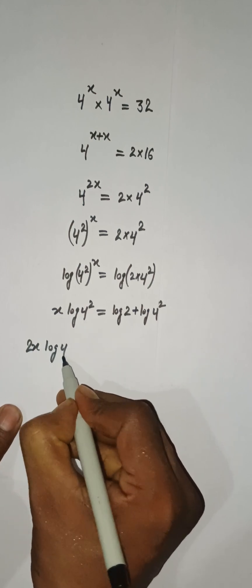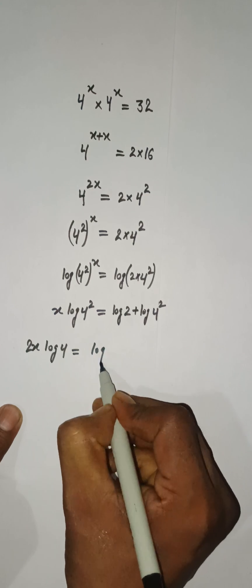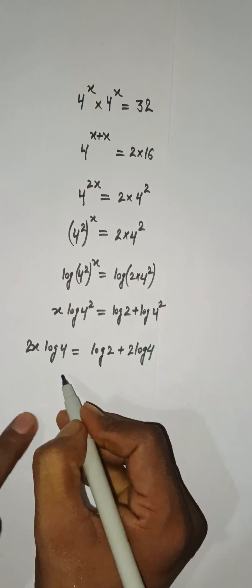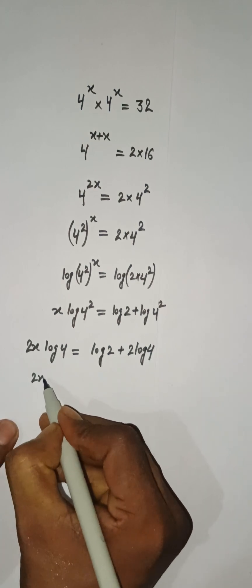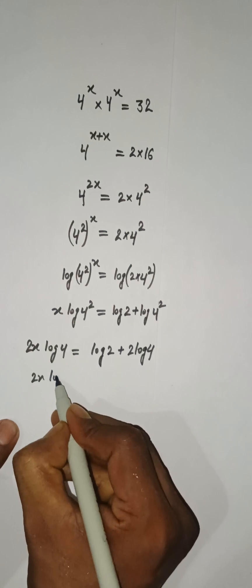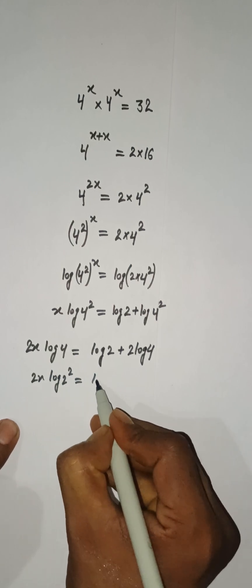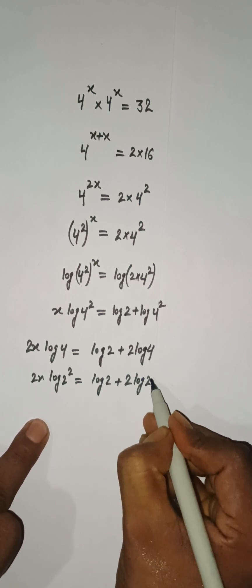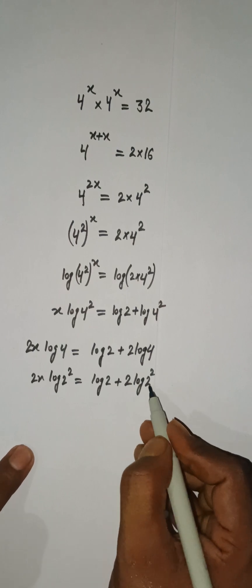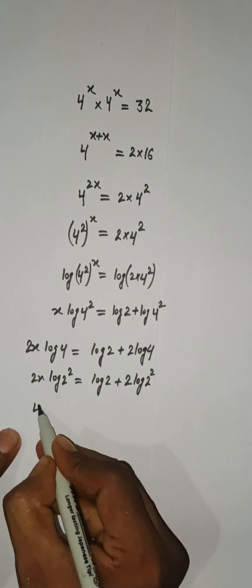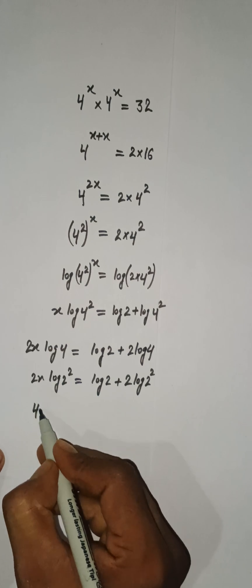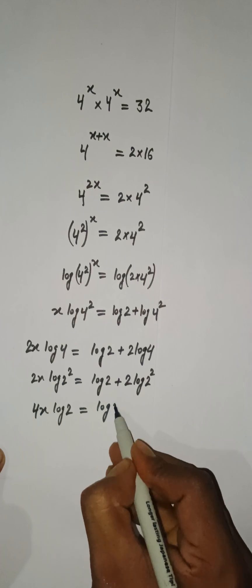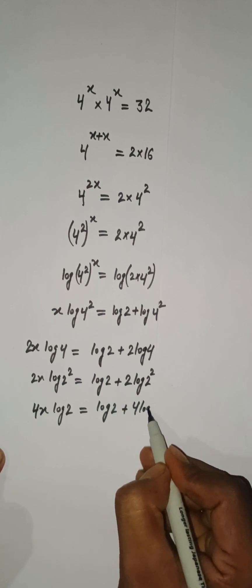So 2x into log 4 we have and here we have log 2 plus 2 log 4. And then I can have 2x log 4 can be written as log 2 to the power 2. Here we have log 2 and we can write 2 log 4 as 2 squared. So here 2 will come here so it will be multiplied with 2x so it will be 4x and then log 2. We have log 2 plus 4 log 2.